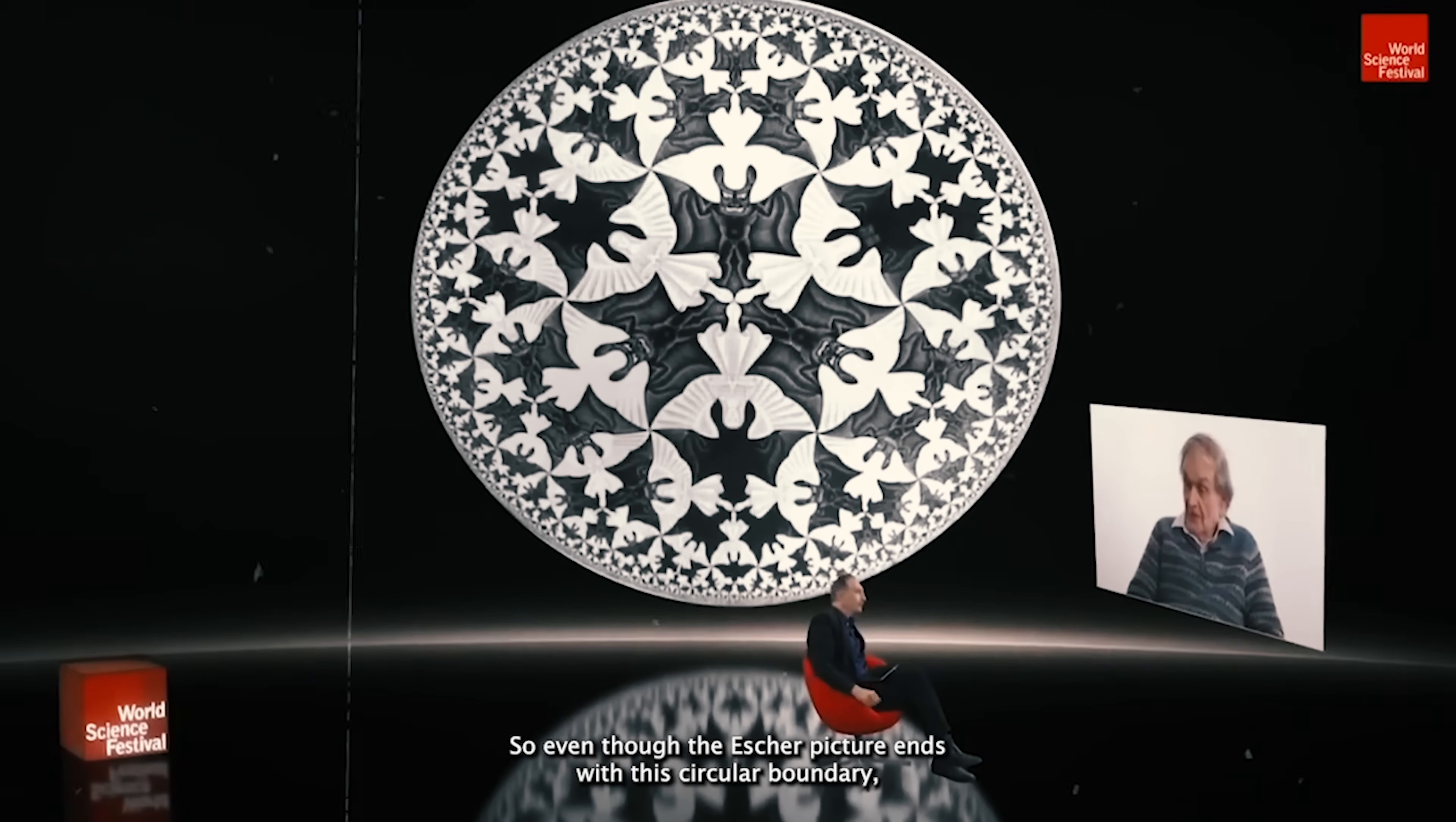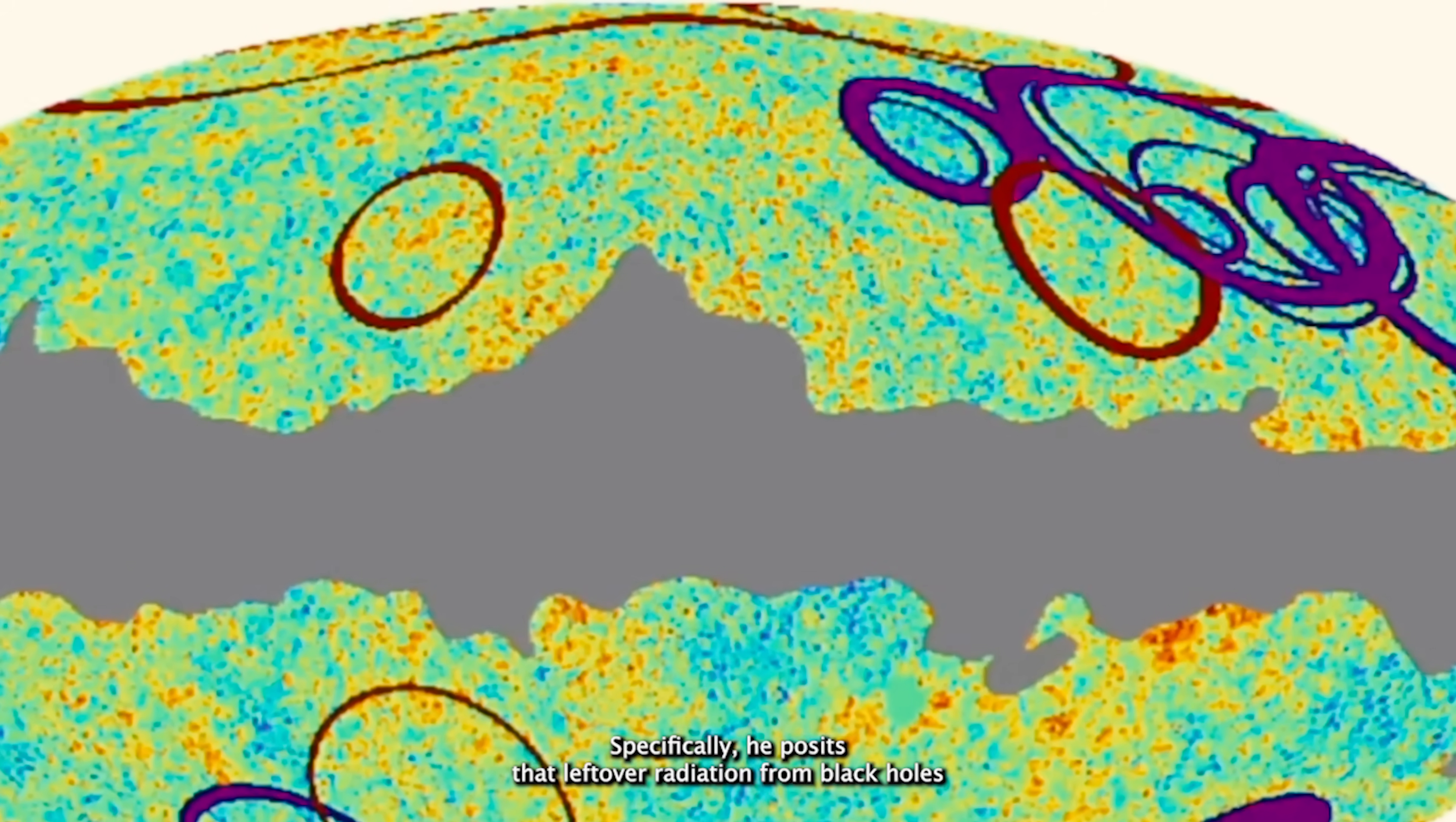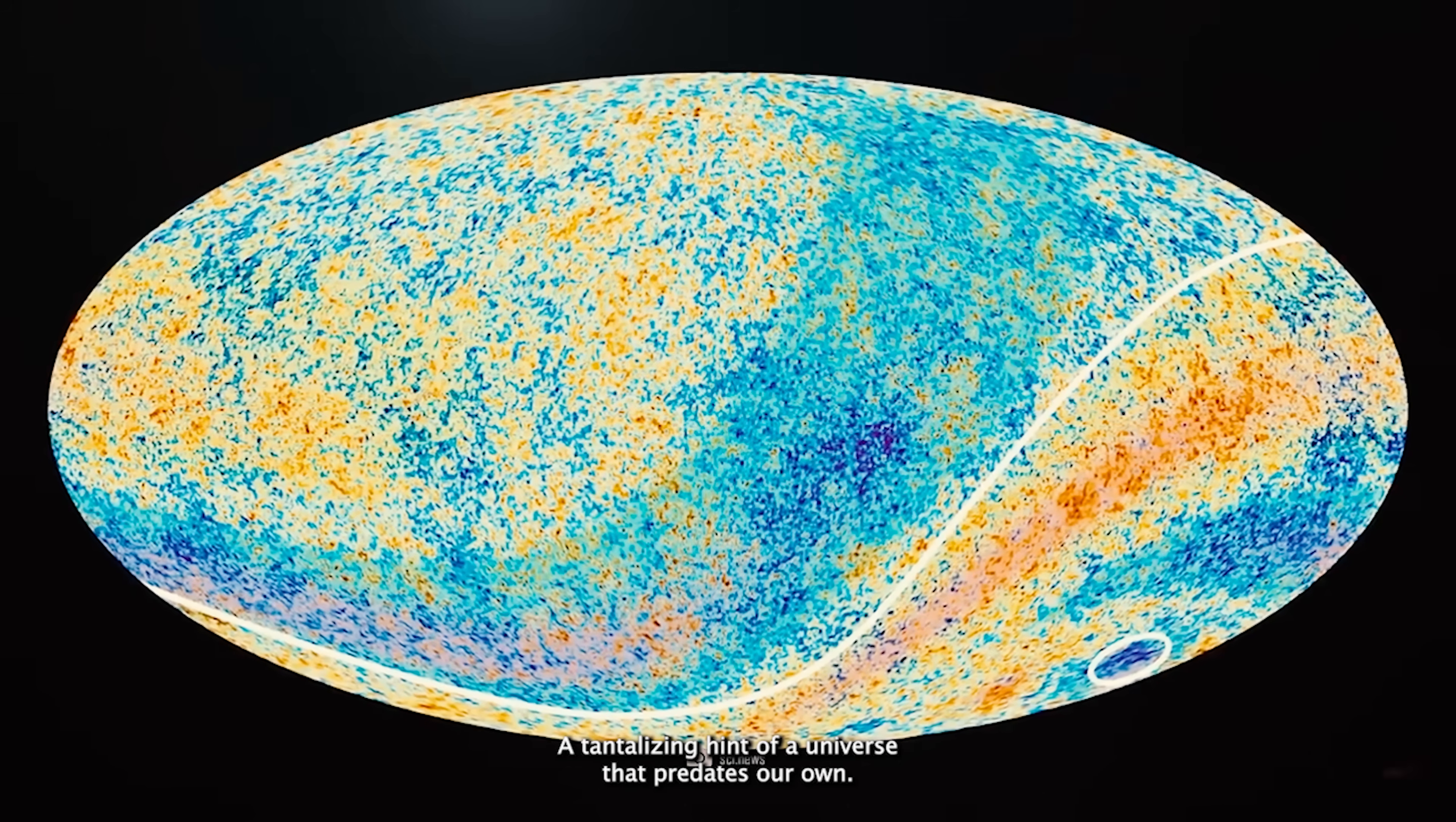So even though the Escher picture ends with this circular boundary, you could still imagine that the space-time continues out beyond that. Specifically, he posits that leftover radiation from black holes of a previous cosmos could still linger as faint imprints in the CMB, a tantalizing hint of a universe that predates our own.